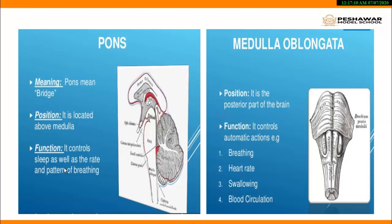Now we have the pons. The word 'pons' means bridge, so its function — as suggested by its name — is to communicate two parts of the brain with each other. It is located above the medulla oblongata. The pons controls sleep as well as the rate and pattern of breathing. When we exercise, the rate of breathing changes, and this is controlled by the pons part of the brain.